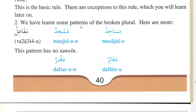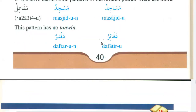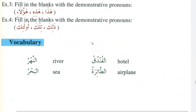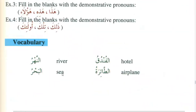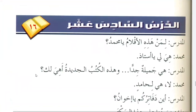You have learned some patterns of broken plural (jama' takseer) in the previous lesson. Now you are learning a few more — for example, the pattern mafa'ilu: masjidum becomes masajidu, daftarum becomes dafathiru. Any word on the pattern of mafa'ilu cannot take tanwin.